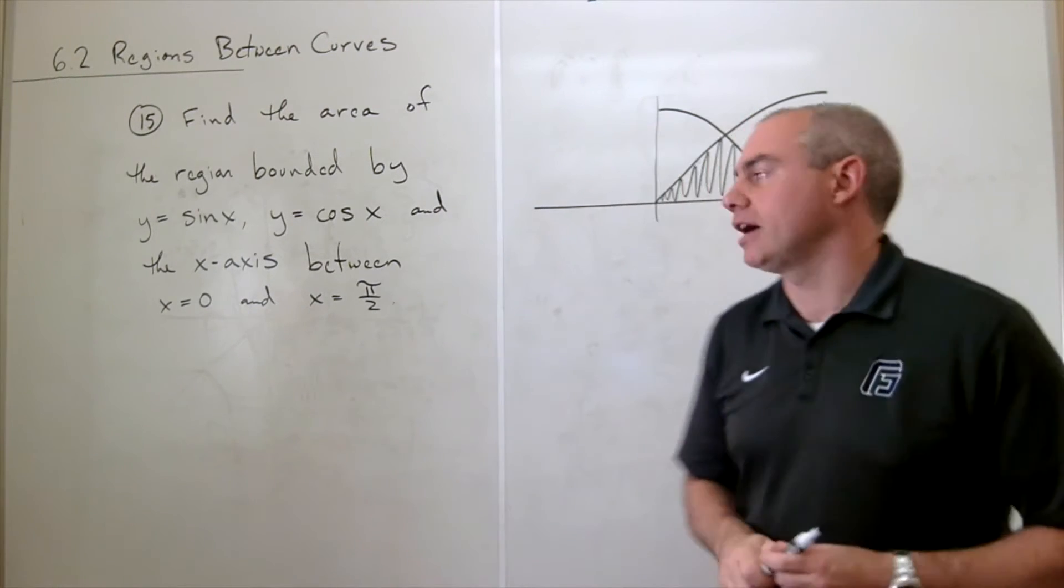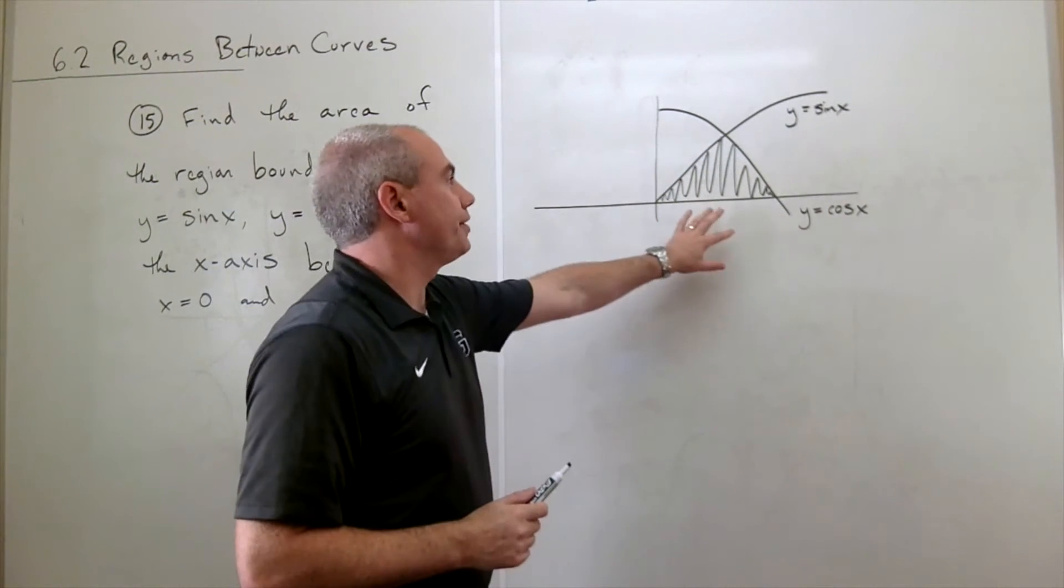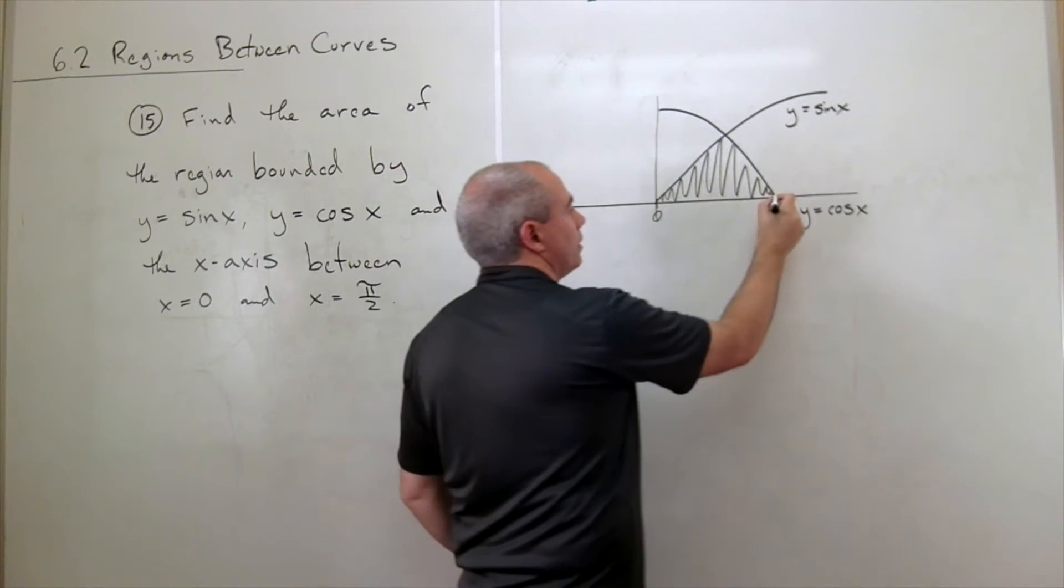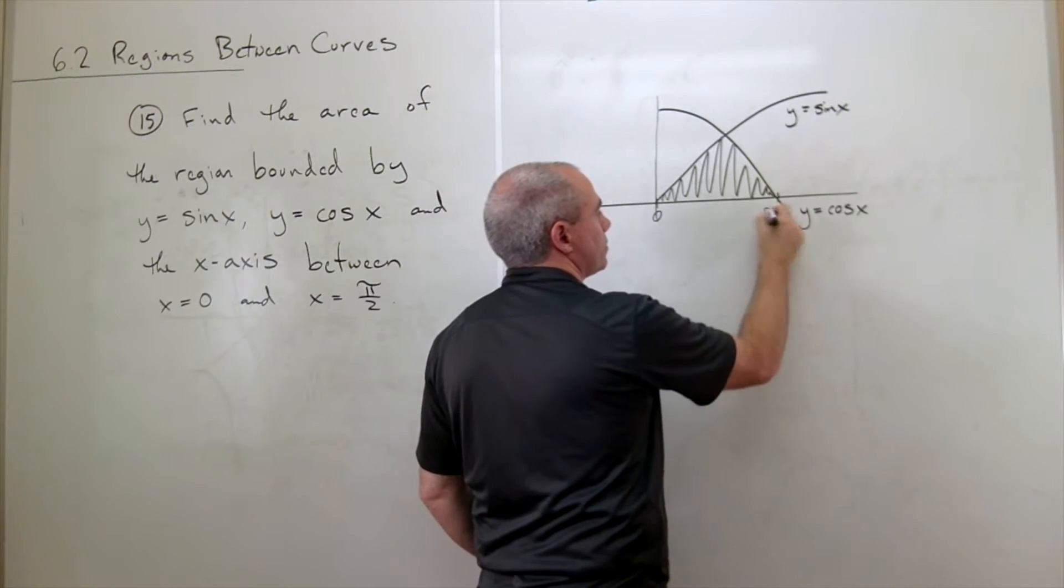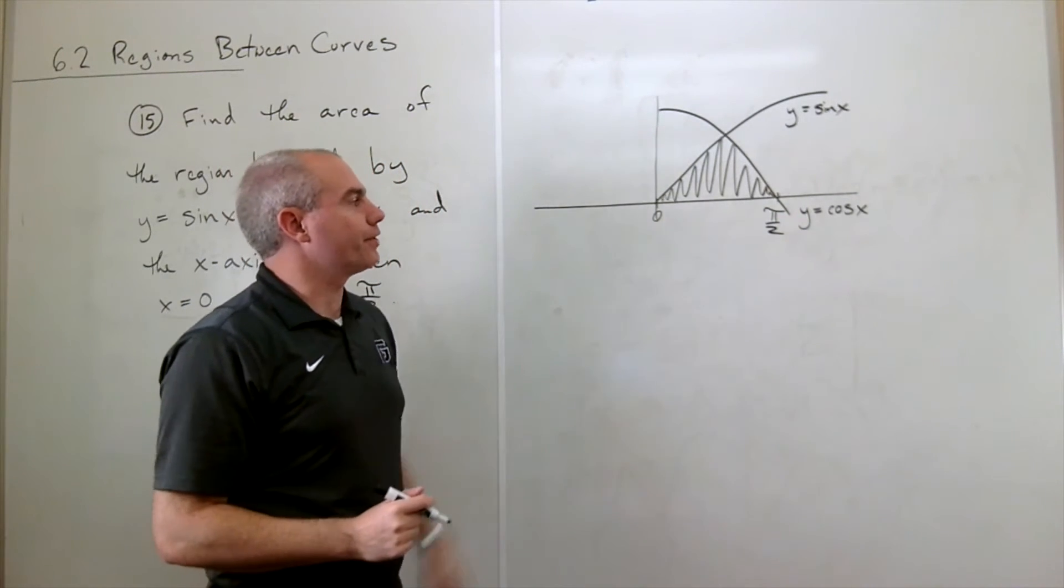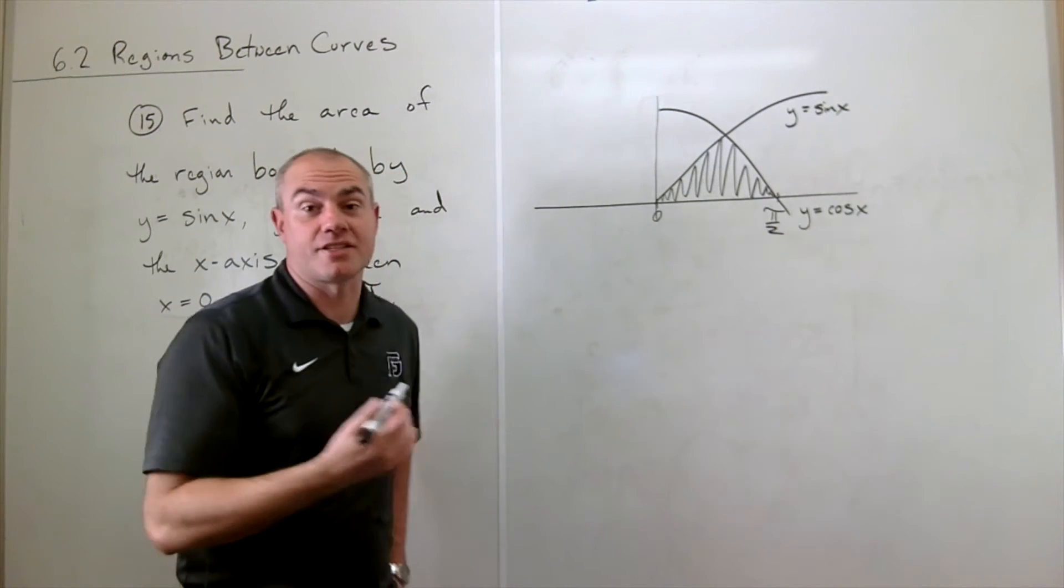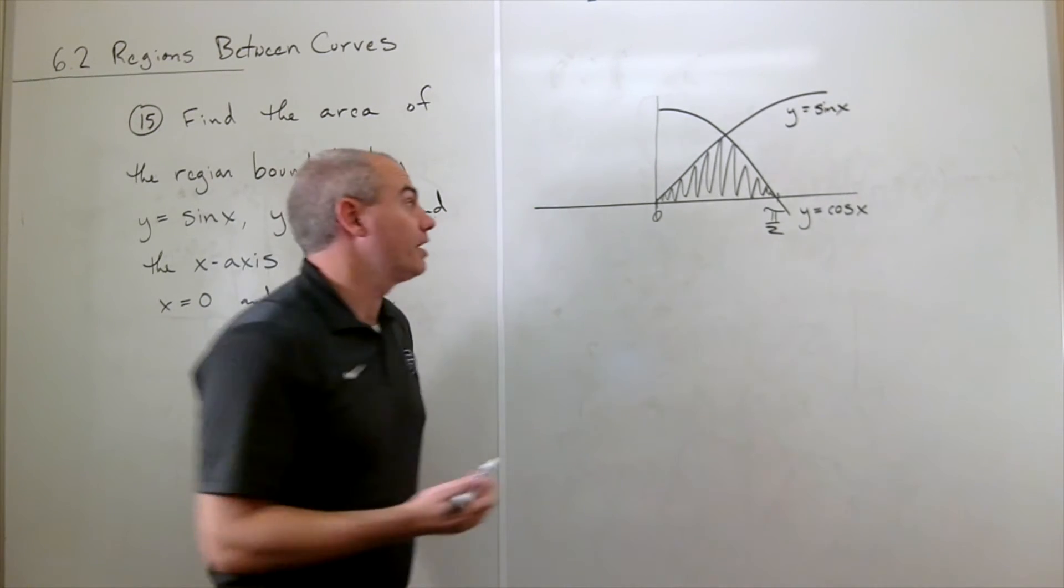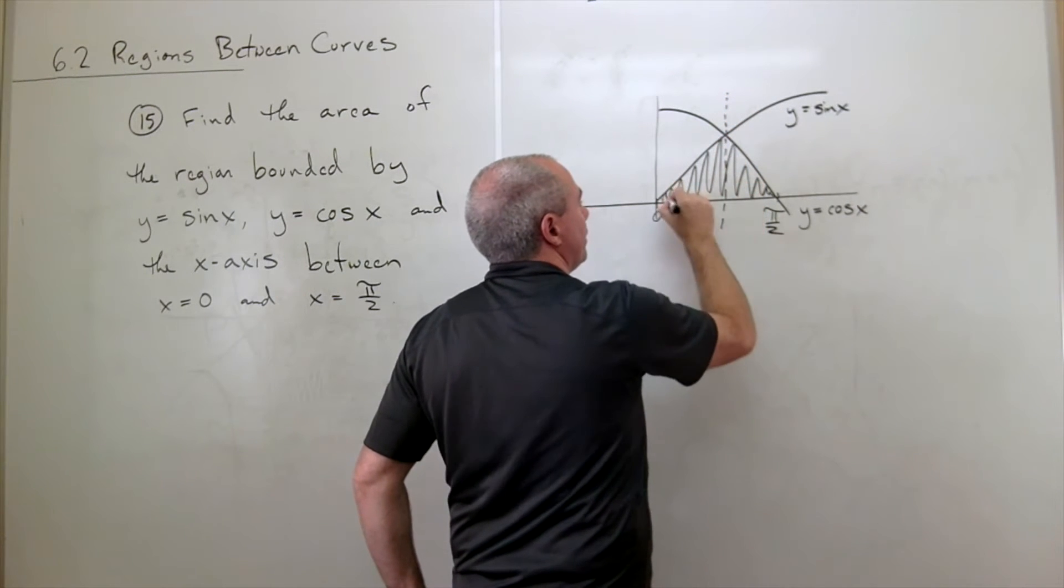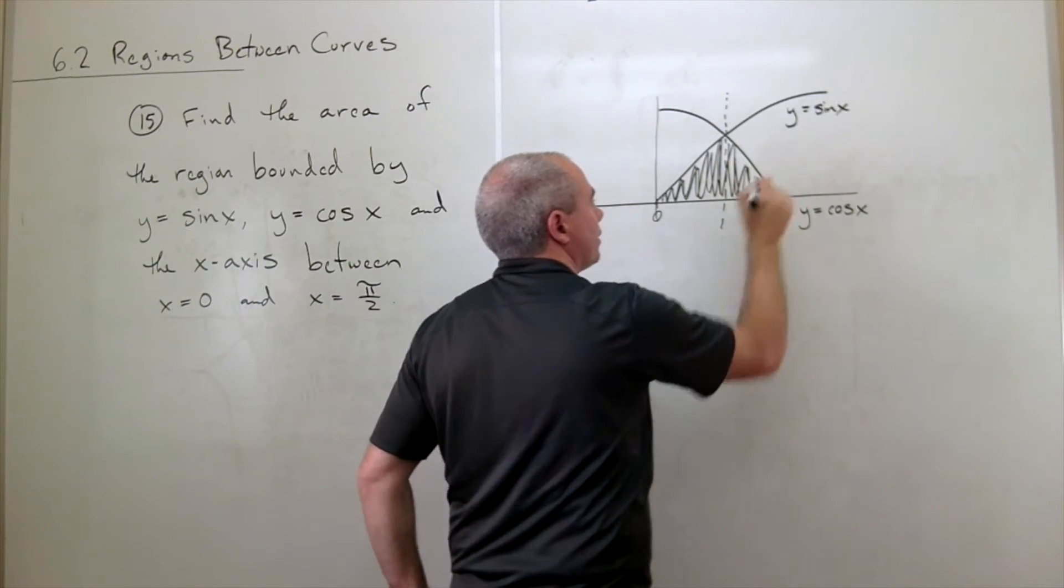So over here, I've drawn these two curves out, and of course this is where x is 0, and this is where x equals pi over 2. And the first thing that I notice about this region is it is a symmetric region. So if I cut it in half, then this side over here is exactly the same as this side over here.